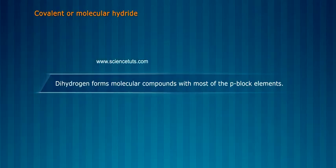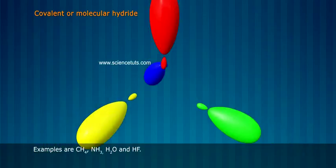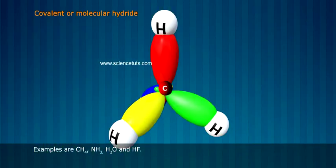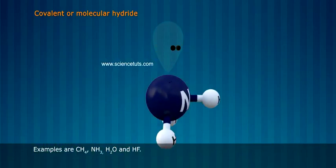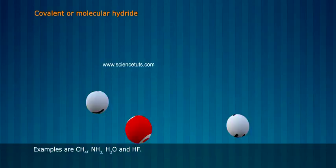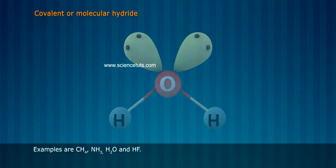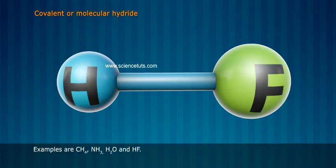Covalent or molecular hydrides: Dihydrogen forms molecular compounds with most p-block elements. Examples are CH₄ (methane), NH₃ (ammonia), H₂O (water), and HF (hydrogen fluoride).